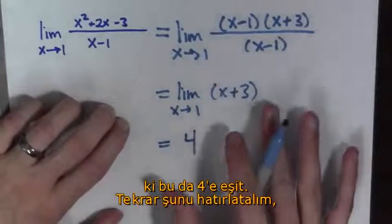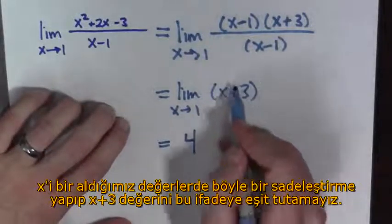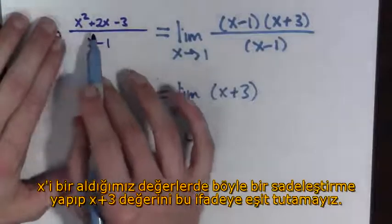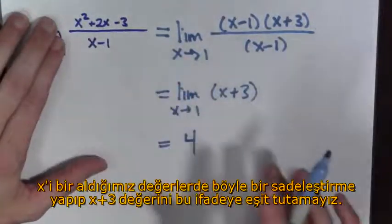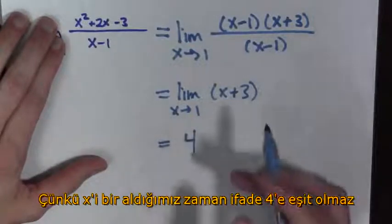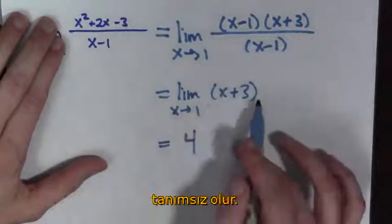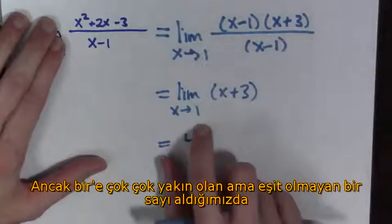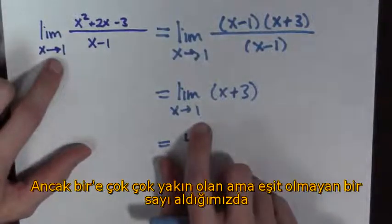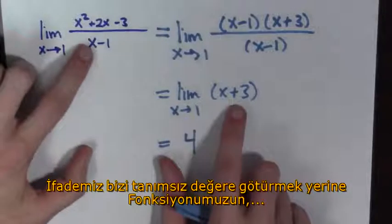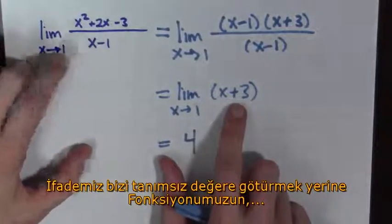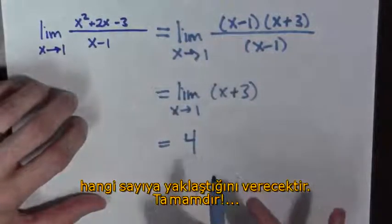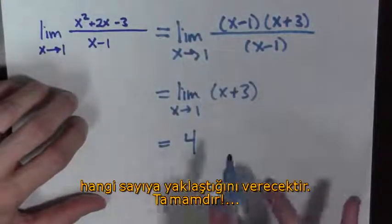We should point out that x plus 3 as a function is not equal to x squared plus 2x minus 3 all over x minus 1, because when we evaluate x at 1 this one is equal to 4 and this one is undefined. However, near 1 but not equal to 1 these two functions agree. Hence the limits are the same, and hence this is a legal set of moves. Done!